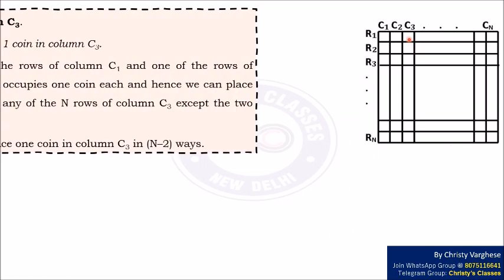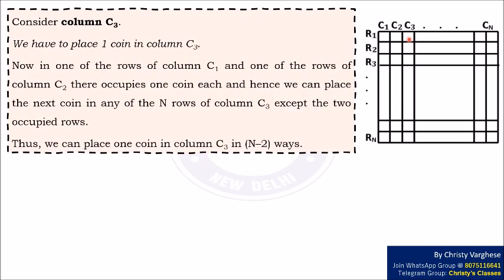Consider column C3. We have to place one coin in column C3. Now, in one of the rows of column C1 and one of the rows of column C2, there occupies one coin each and hence we can place the next coin in any of the N rows of column C3 except the two occupied rows. Thus, we can place one coin in column C3 in N-2 ways.